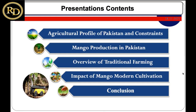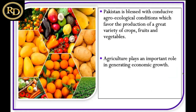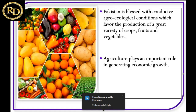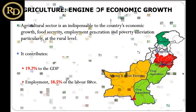Pakistan is an agricultural country and agriculture is the engine of economic growth. Pakistan is blessed with conducive agro-ecological conditions that favor production of great variety of crops, fruits, and vegetables. Agriculture plays an important role in generating economic growth. The agriculture sector is indispensable to the country's economic growth, food security, and employment generation. Agriculture contributes around 19 percent to the total GDP and engages employment of around 40 percent of the workforce.